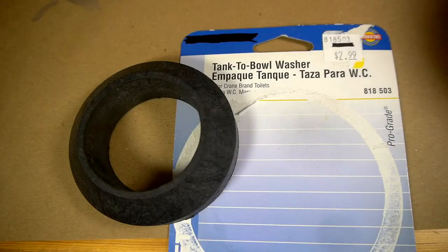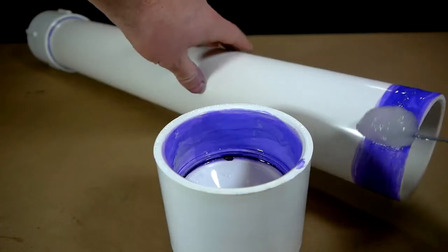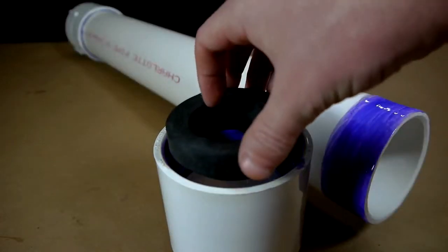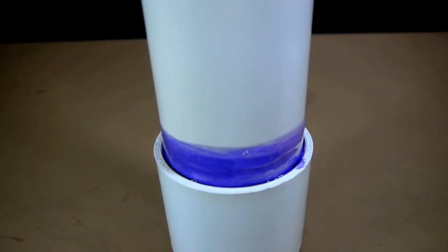The bumper I will be using is a 3 inch tank to bowl washer that is usually used for repairing toilets and can be found in the plumbing section of most hardware stores. The washer should be placed inside the coupling so it sits flat against the reducer and the whole thing can now be glued to the chamber where it belongs.